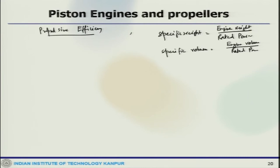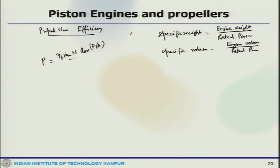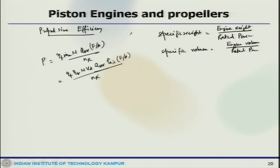The relationships between these performance parameters can be established. Power P equals eta_F times m_dot_A times n times Q_HV times fuel-air ratio divided by n_R, which is eta_F times eta_V times n times V_D times Q_HV times rho_A_i times F/A divided by n_R. So eta_V is now coming into the picture.